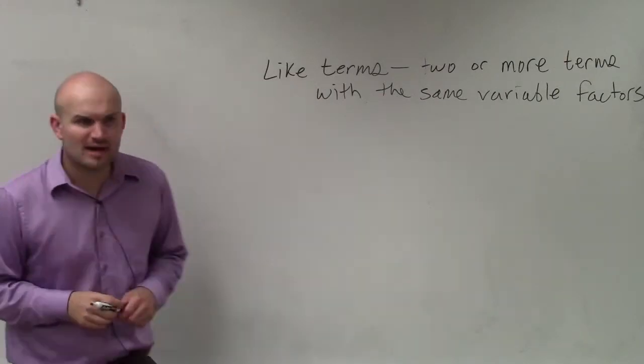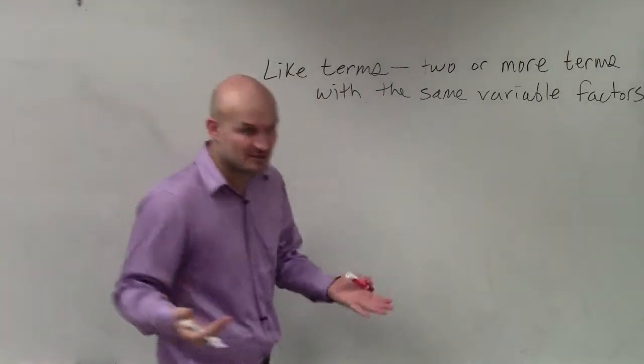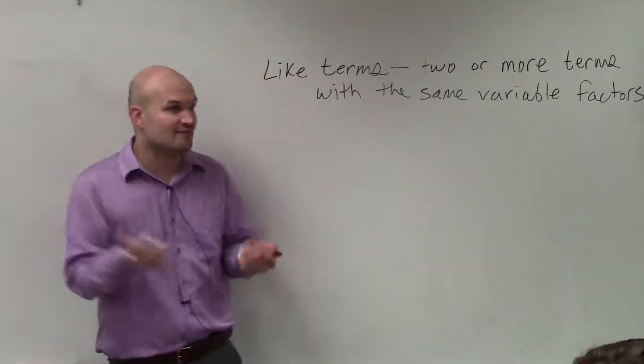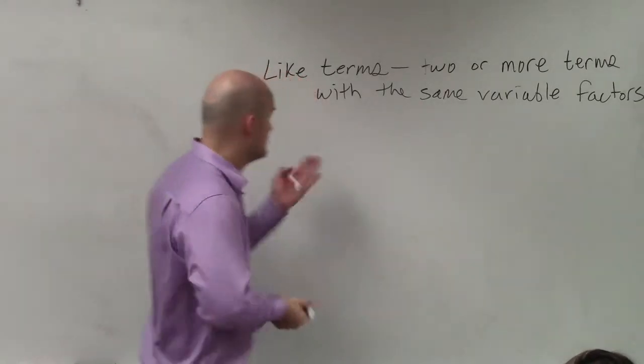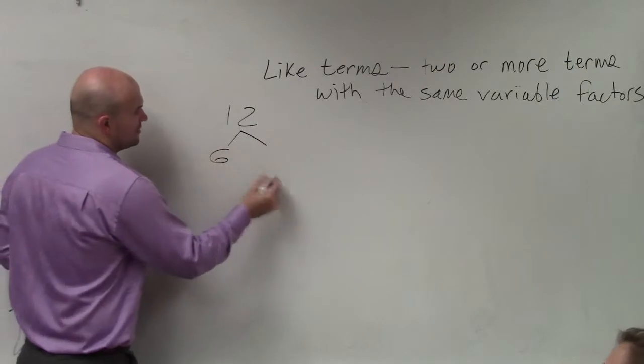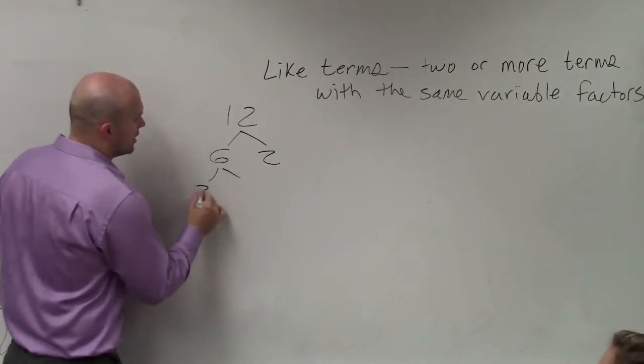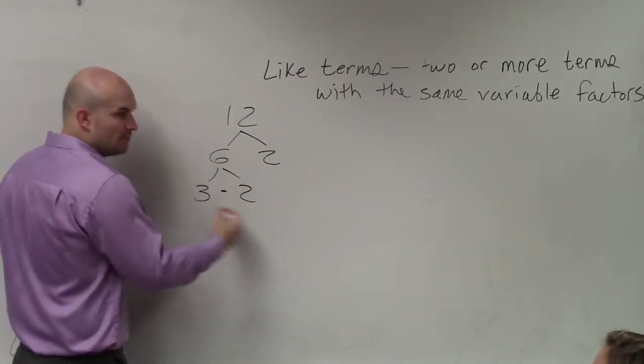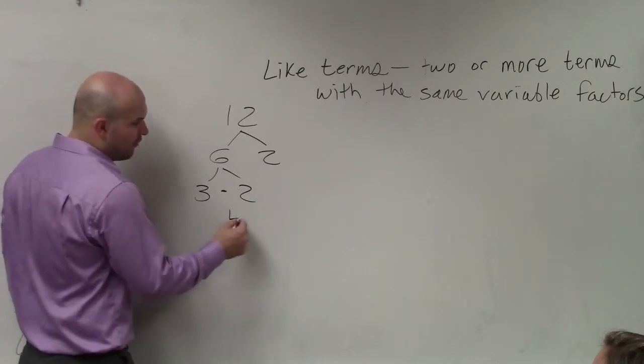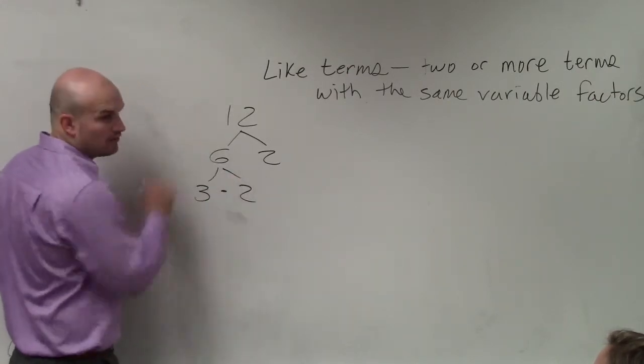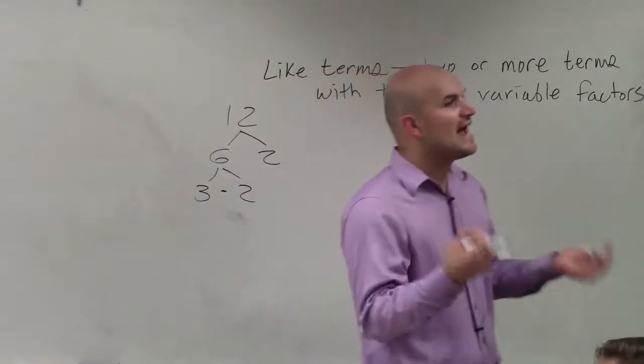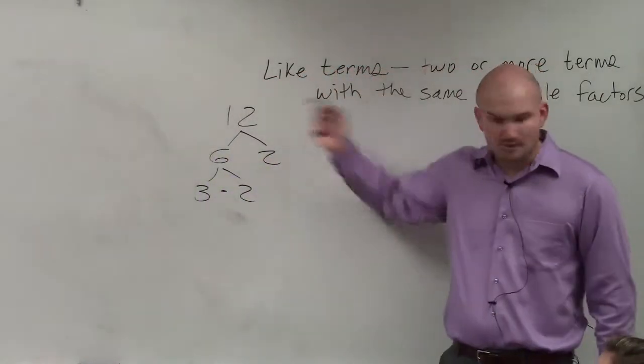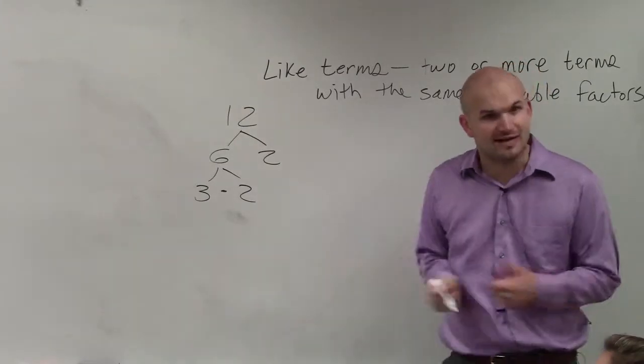So what exactly do I mean by variable factors? Well, we talked about factors. We talked about numbers that divide into one. We talked about the number 12. That has many factors. If we look into prime factorization, you could say 6 and 2, 3 and 2. We could write it down to its prime factors. 4 is also a factor of 12 as well, right? 4 times 3. So there's many factors that we could write for 12. There's a lot of numbers that evenly divide into it.